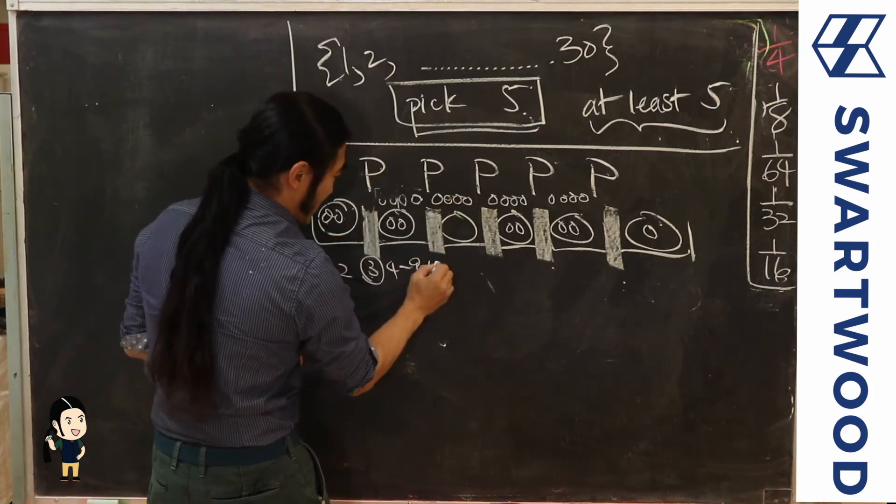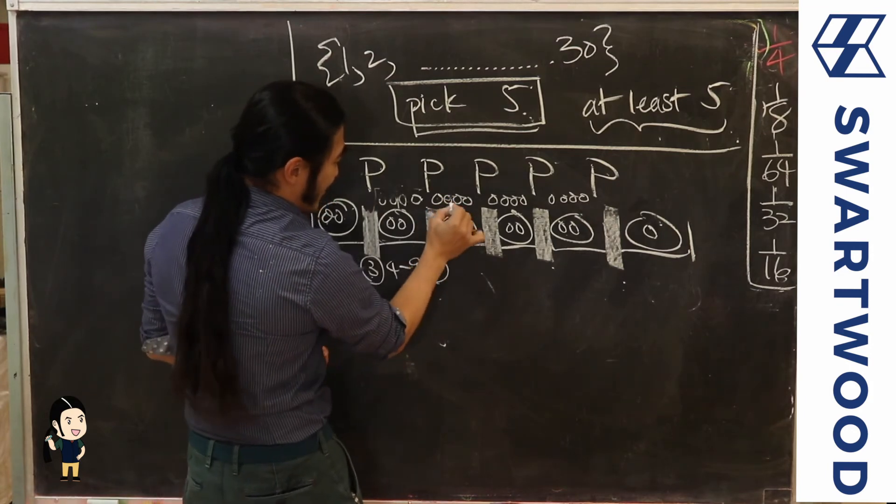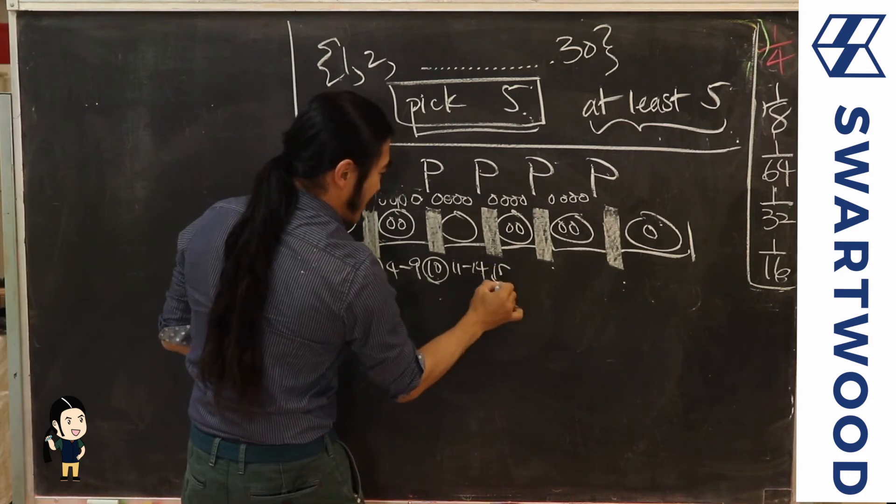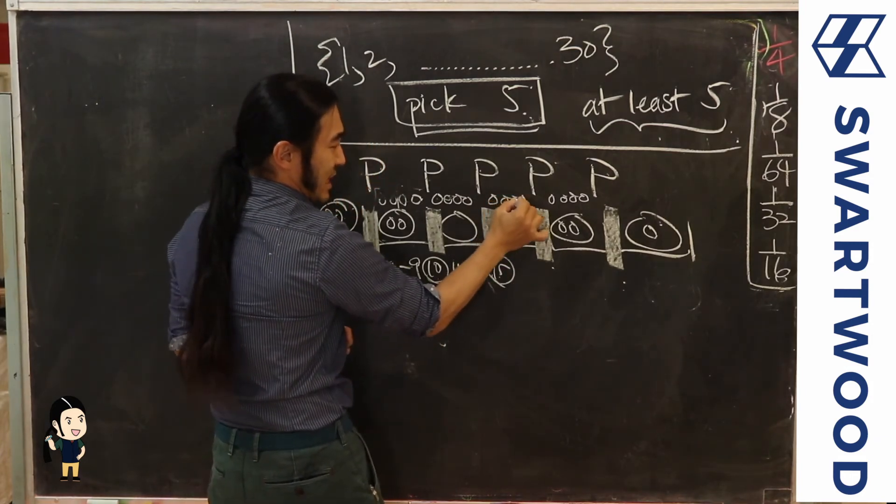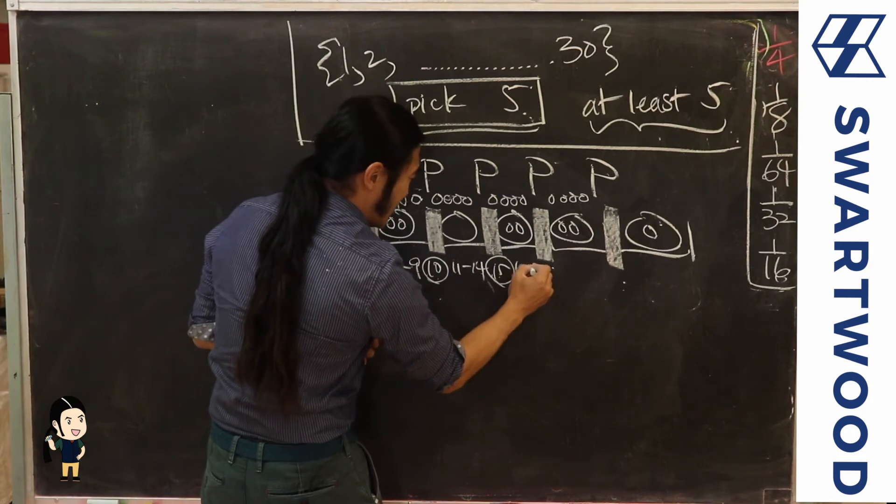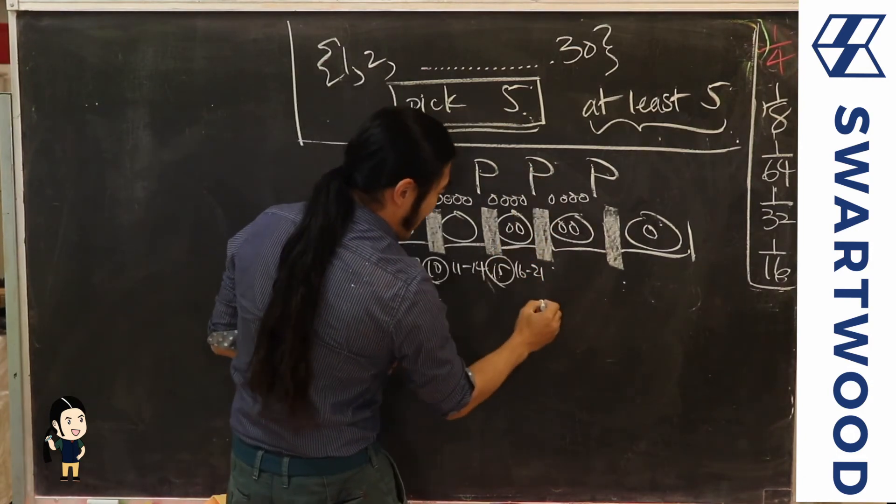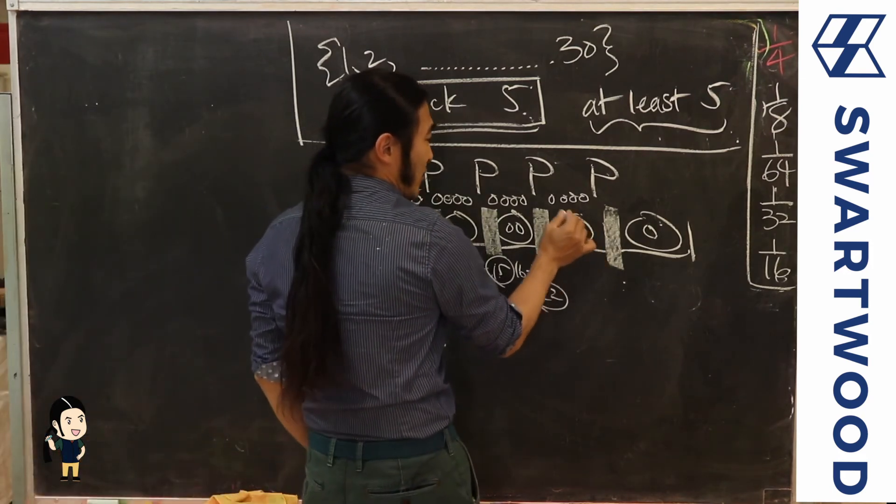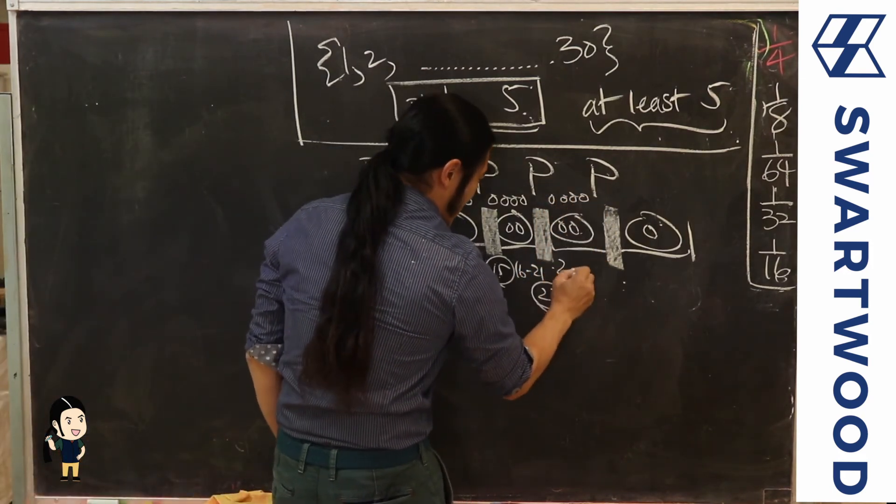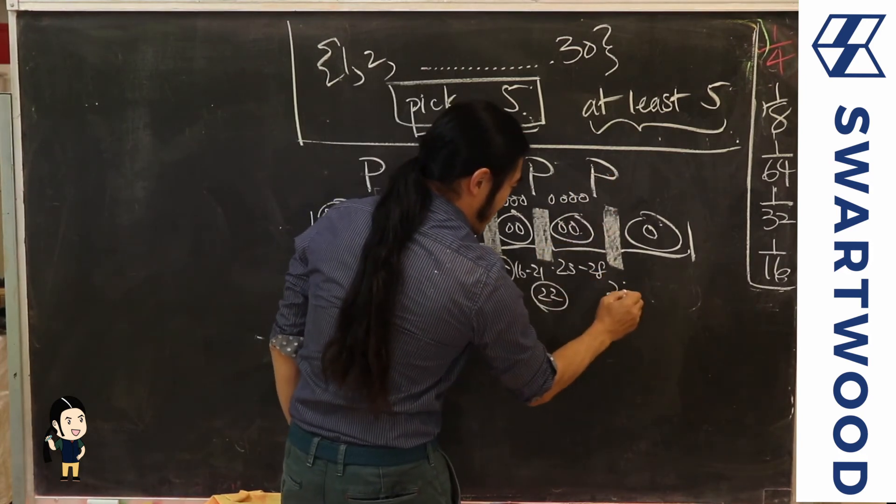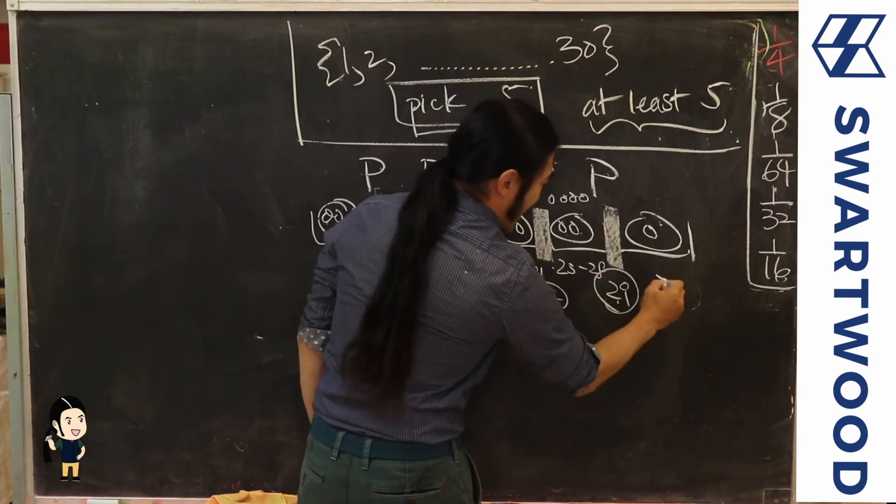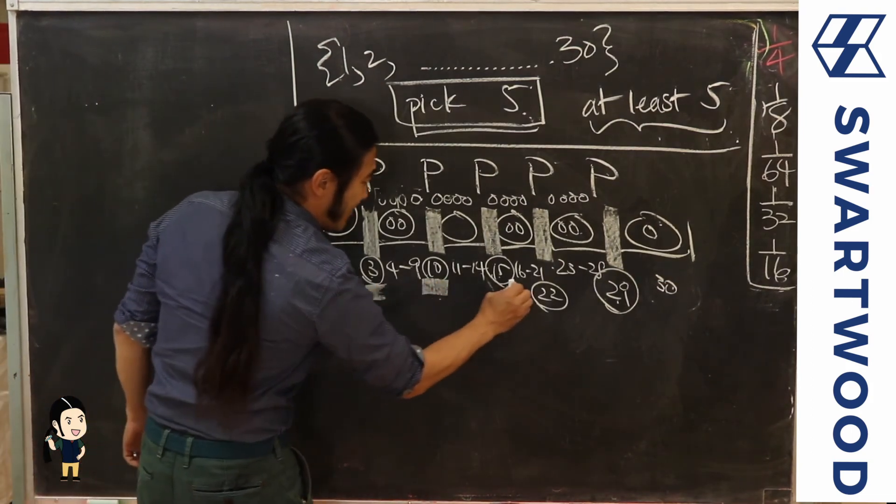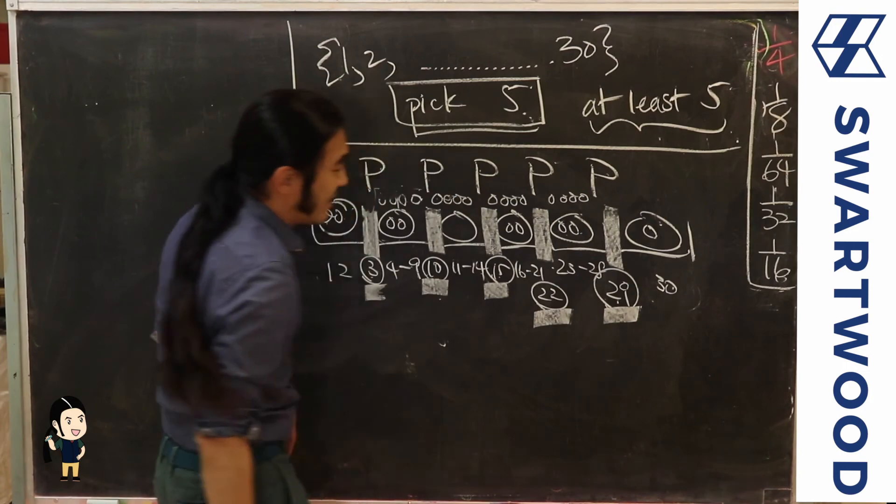Then eleven twelve thirteen fourteen, so 11 to 14 we don't pick, we pick this one, 15. Then 16 17 18 19 20 21, so 16 through 21 we don't pick, and over here we pick 22. Then we go 23 24 25 26 27 28, so 23 through 28 we don't pick, and then we pick this one as 29. Then we throw away 30. So now you can definitely see our numbers are 3, 10, 15, 22, and 29.